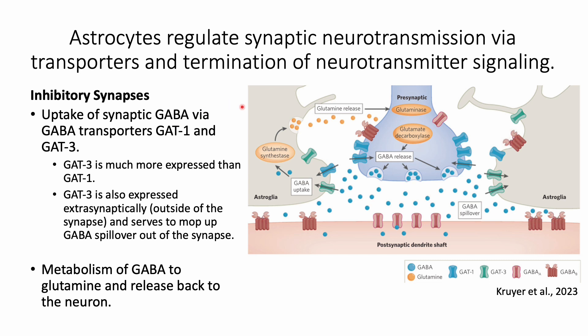At inhibitory synapses, astrocytes perform a similar function. They take up GABA using two transporters, GAT-1 and GAT-3. GAT-3 is much more expressed than GAT-1, and in addition to its synaptic location, GAT-3 is also expressed extra-synaptically, outside of the synapse. This serves to mop up extra GABA spillover that might escape the synapse, thus helping to stop GABA neurotransmission.